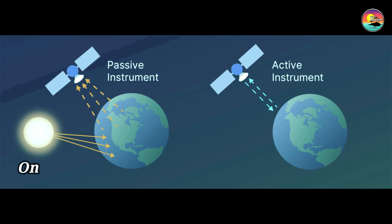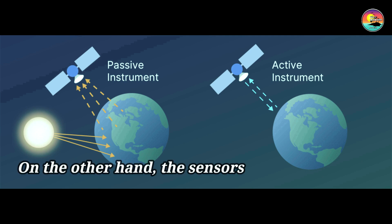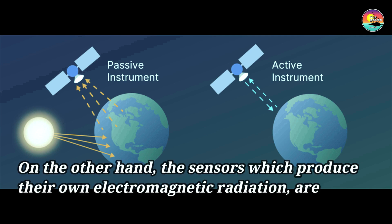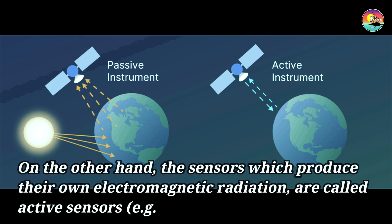On the other hand, sensors which produce their own electromagnetic radiation are called active sensors.